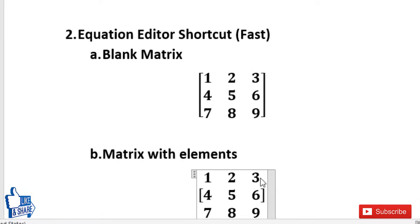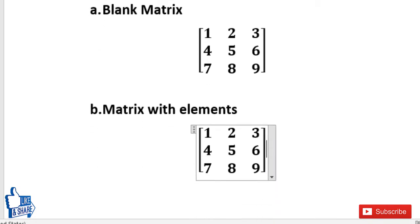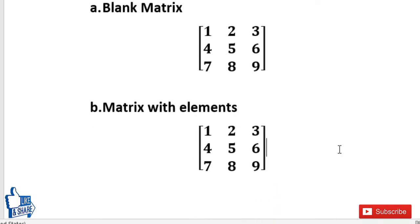Close the bracket and press Space to get the matrix. To apply the square bracket over the entire matrix, move to the end of the square bracket and press Space again. You get the complete matrix — it is very easy to get a matrix using the equation editor shortcut.